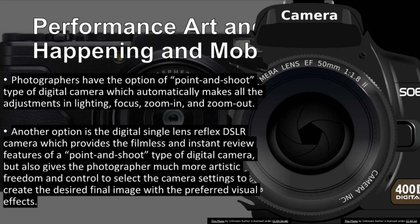Photographers have the option of a point-and-shoot type of digital camera which automatically makes all the adjustments in lighting, focus, zoom in, and zoom out. Another option is the digital single-lens reflex (DSLR) camera, which provides the filmless and instant review features of a point-and-shoot type of digital camera, but also gives the photographer much more artistic freedom and control to select the camera settings to create the desired final image with the preferred visual effects.